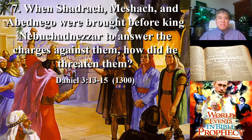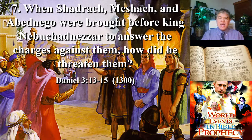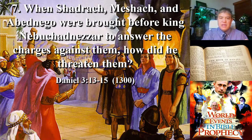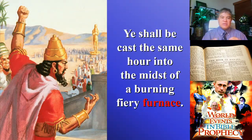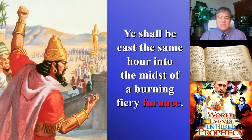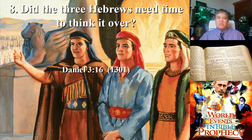When Shadrach, Meshach, and Abednego were brought before the king, Nebuchadnezzar had a certain countenance. They were presented the charges, and King Nebuchadnezzar threatened them — in Daniel 3, verses 13 and 15 — that they would be cast the same hour into the midst of a burning, fiery furnace. He said: 'I'm going to give you a chance. I will allow you to fall down. But if you don't, you're going to be killed.'